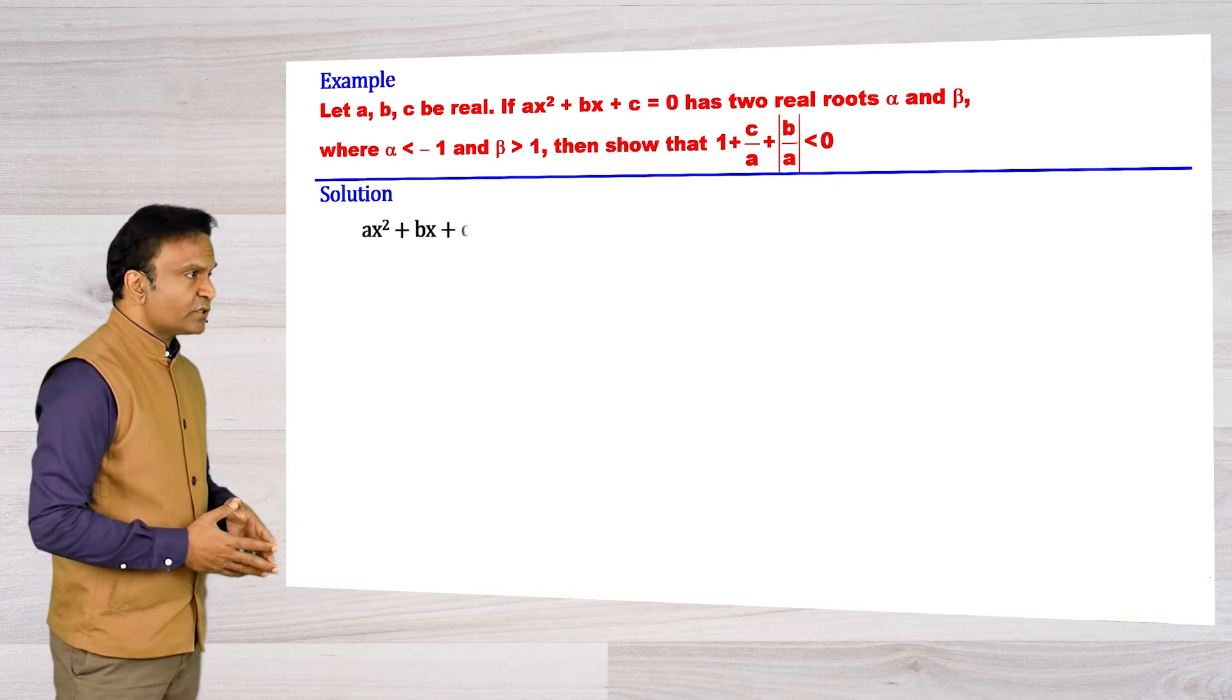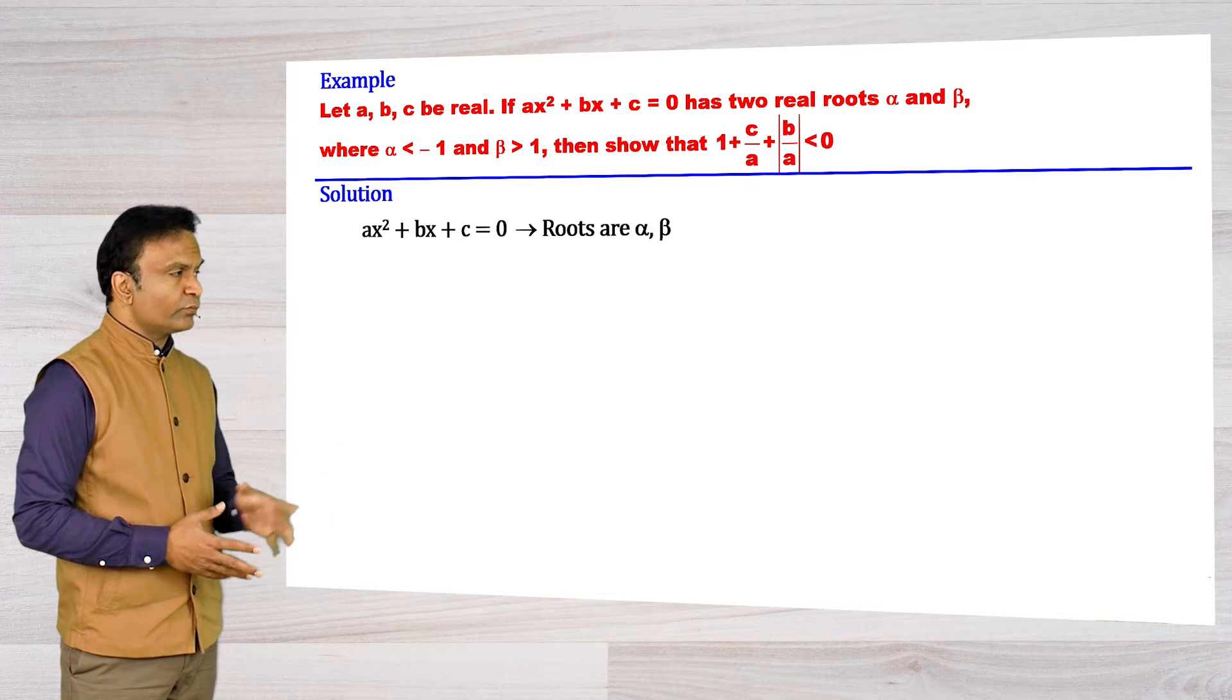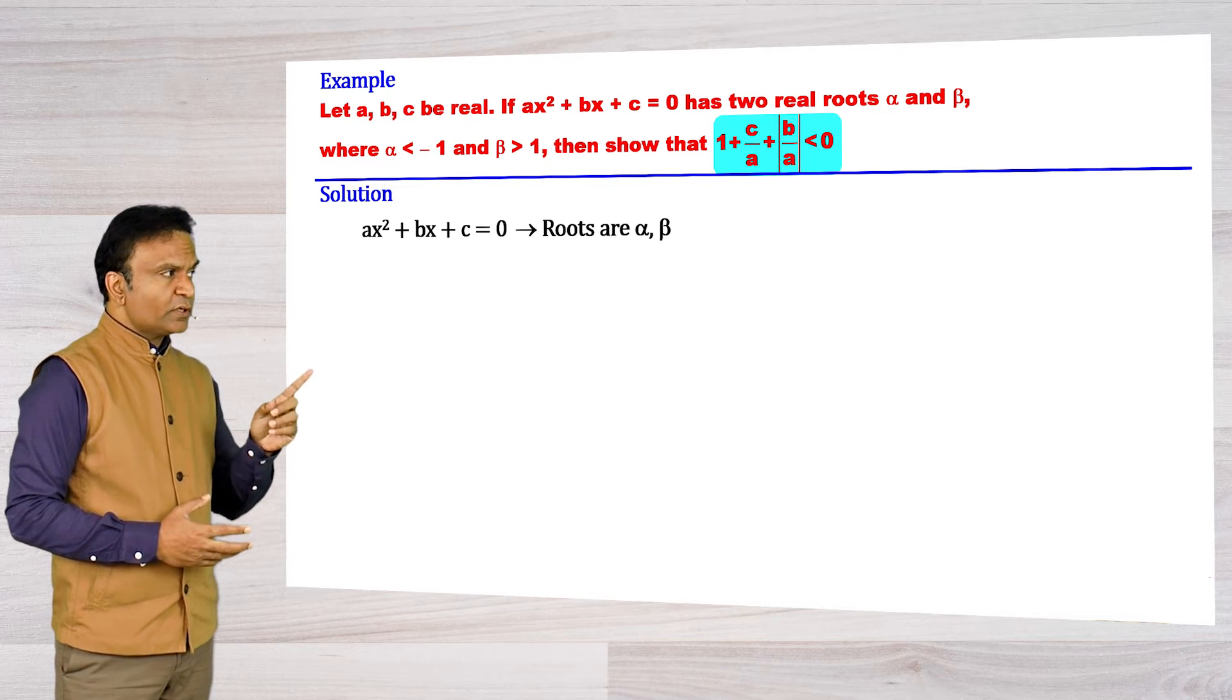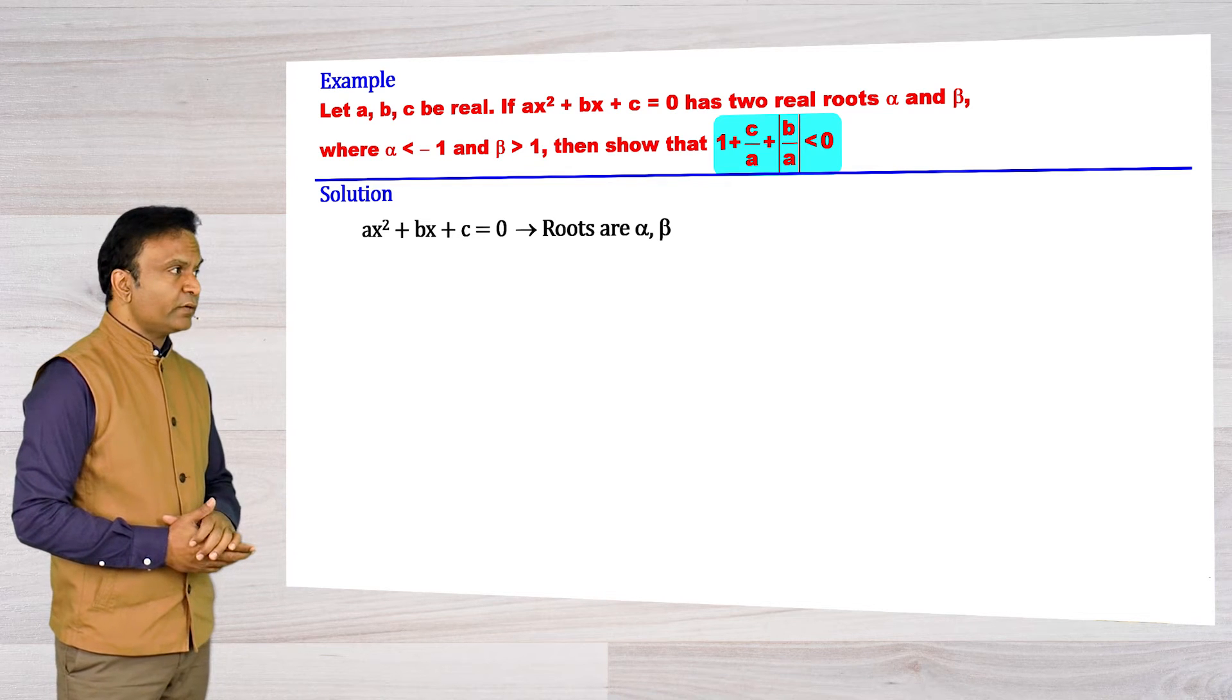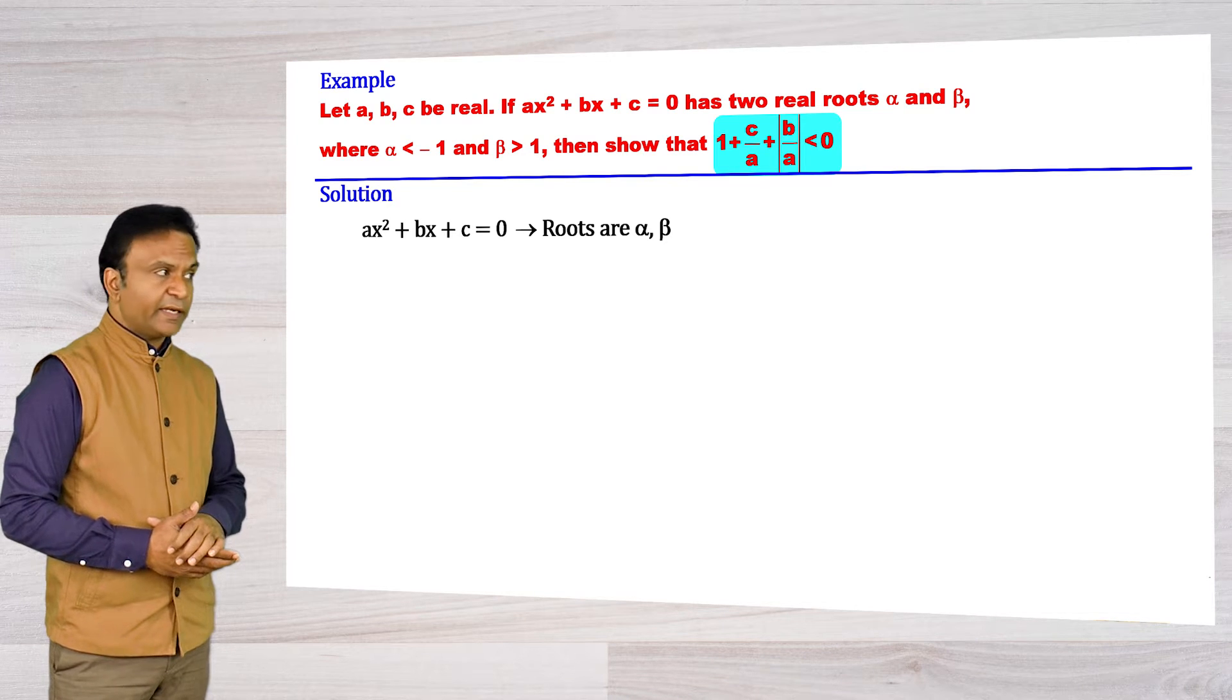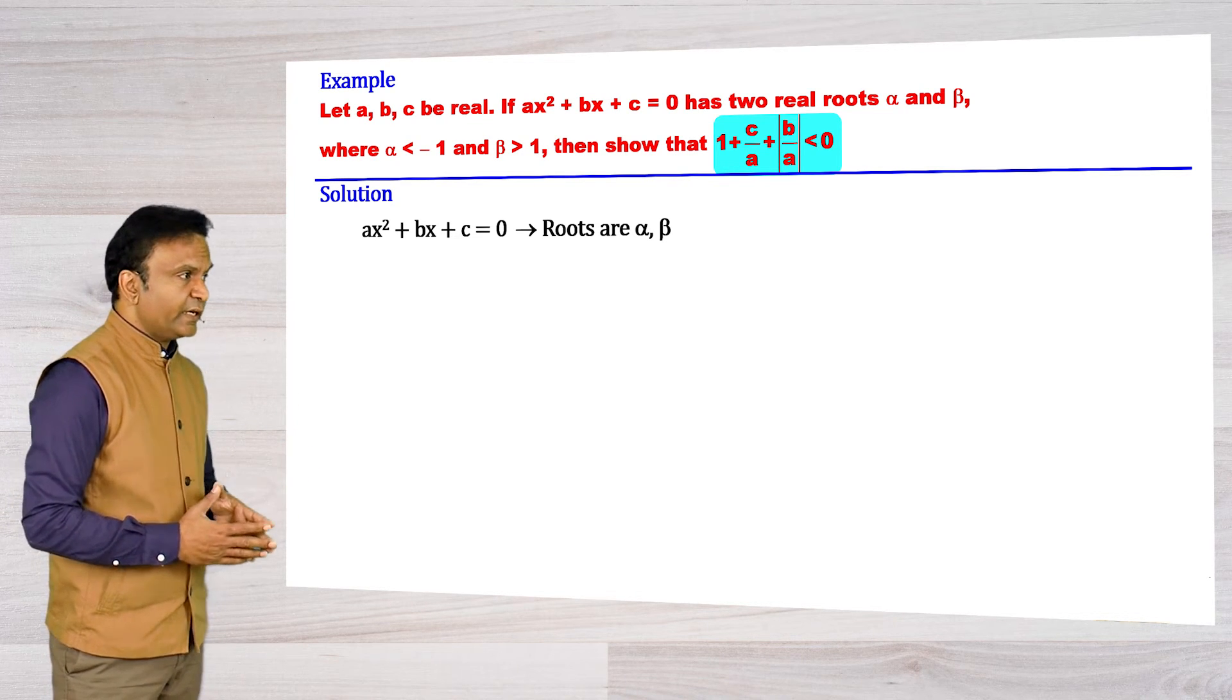We have this quadratic equation having roots α and β, and we have to prove this inequality. Now, from the terms in the inequality c/a and b/a, I get I should divide the given quadratic equation by a.